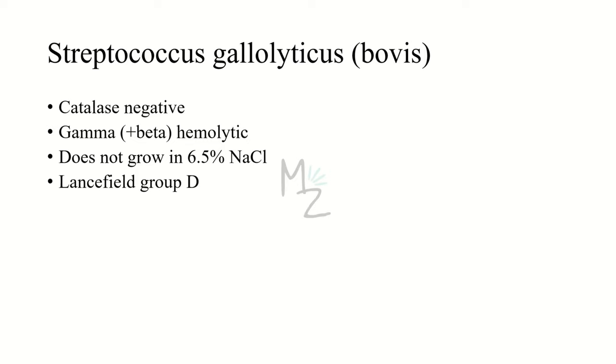That's why you can also say that it is sometimes beta or alpha, but it is mainly gamma hemolytic. As it is non-enterococcus, it does not grow in 6.5% NaCl. And this belongs to Lancefield group D classification. We're going to touch upon the classification in a moment.